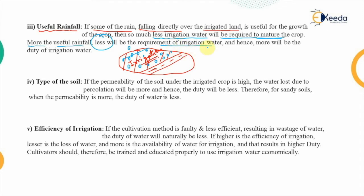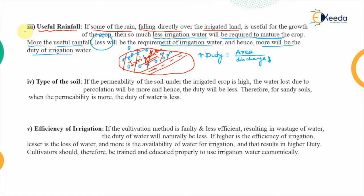Lesser will be the requirement of irrigation water if useful rainfall occurs. If lesser irrigation water is required, more will be the duty of the irrigation water. Because duty is equal to area per unit discharge. If this discharge is decreasing, obviously this duty will be increased. So that is the third factor which affects the duty.